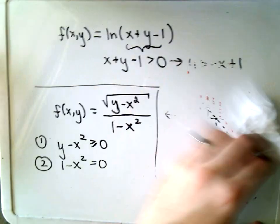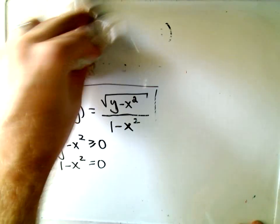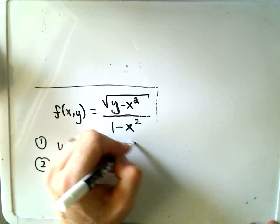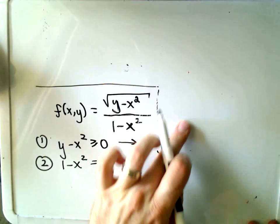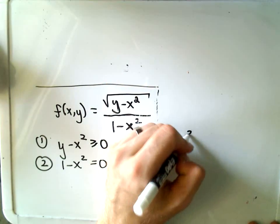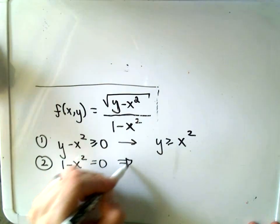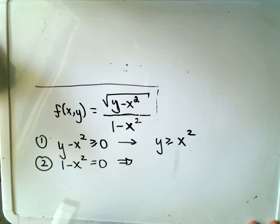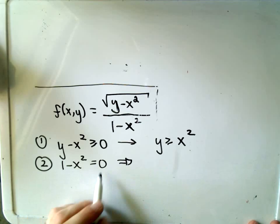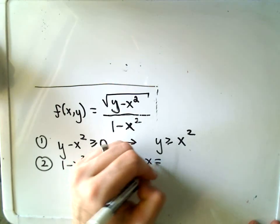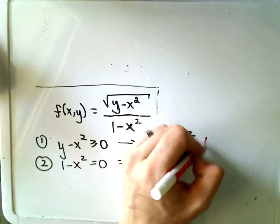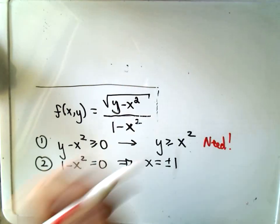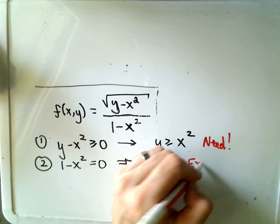If you take the first inequality, you'll simply get y is greater than or equal to x squared. But if we solve the second equation, either factor it or just do the square root of each side, we'll get x equals positive and negative 1. So these are going to be values, we need the first one to happen, but the second one we have to exclude these values.